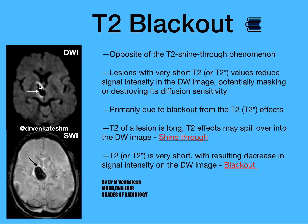So what is shine-through? If the T2 of a lesion is long, the T2 effects will spill over into the diffusion-weighted image, but the ADC also appears bright — meaning there will be no decreased ADC values; the ADC values will be increased. That is called T2 shine-through. The opposite is T2 blackout — if T2 or T2 star is very short, it results in decreased signal intensity on the diffusion-weighted image. This is called T2 blackout phenomenon. Thank you very much.